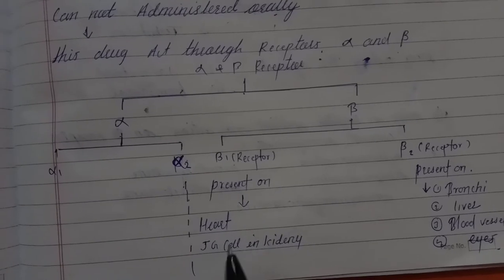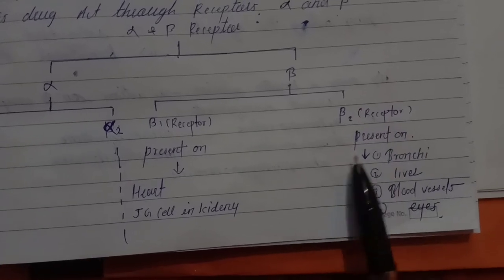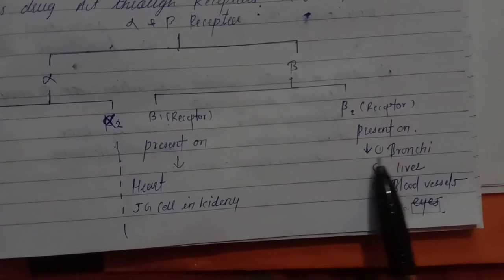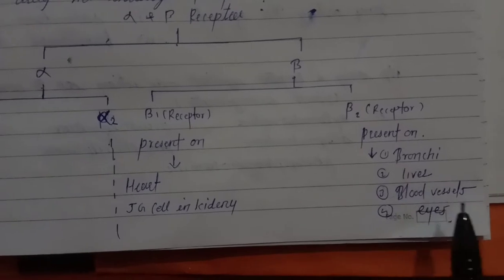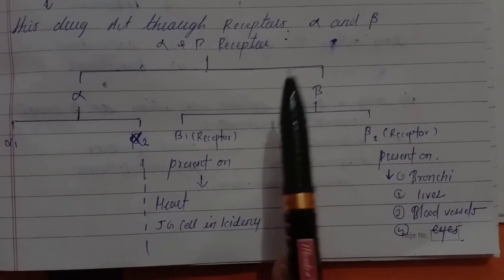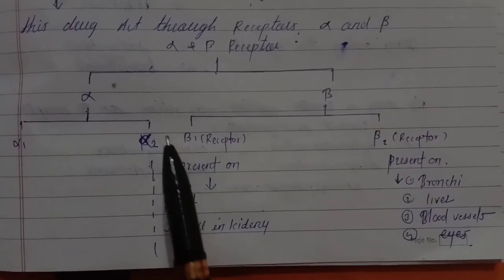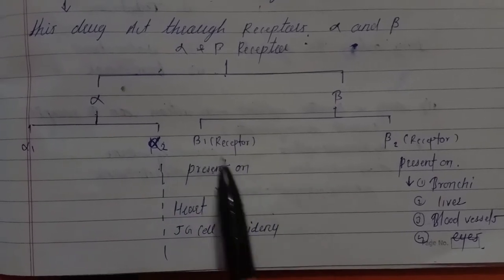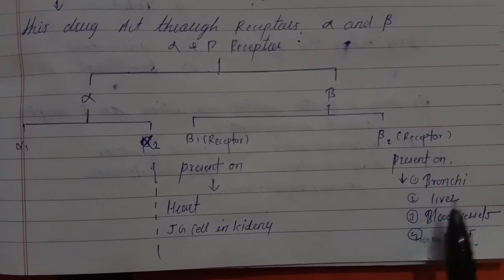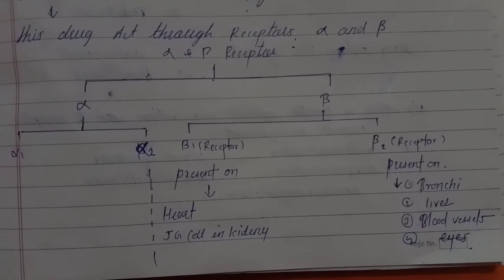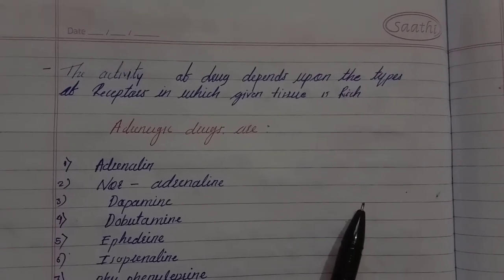Beta-2 receptors are present on the bronchi, liver, blood vessels, and eyes. To recap: beta-1 receptors are on the heart and juxtaglomerular cells in the kidney, and beta-2 receptors are on the bronchi, liver, blood vessels, and eyes.